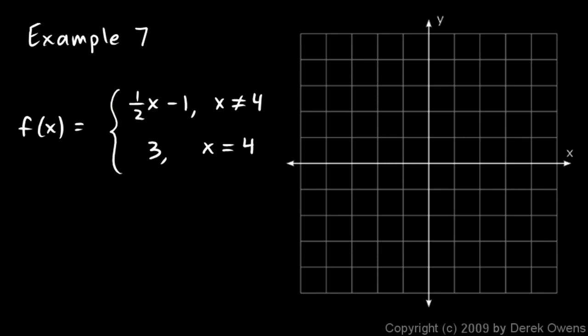As long as x is not equal to four, the value will be computed with this expression, and this is just a line. The line one-half x minus one has a slope of one-half and a y-intercept of negative one. So we can graph that y-intercept of negative one, and a slope of one-half means we go up one over two, and we can start graphing this.